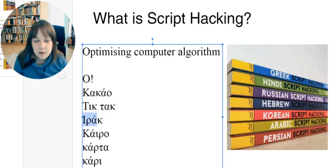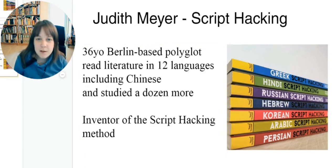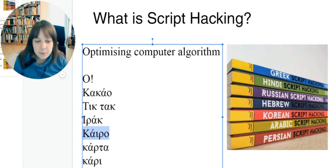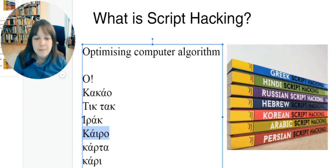The next word includes an extra letter that you haven't seen yet. It's the letter Rho, which is the Greek R. And the country name is of course Iraq. Sorry. Here we have a city name — can you read it already? It's in Egypt. The city is Cairo.